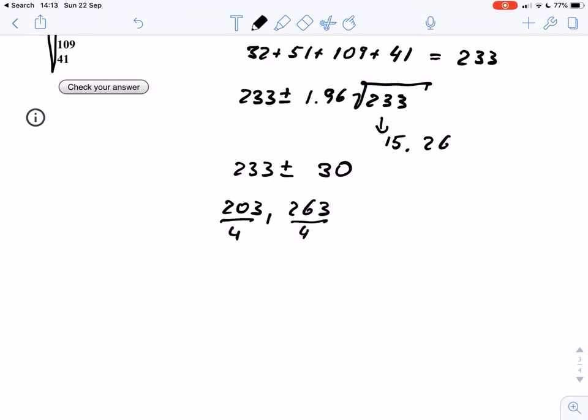And 203 divided by 4, this gives us roughly 50, 51 colonies. I just round up.